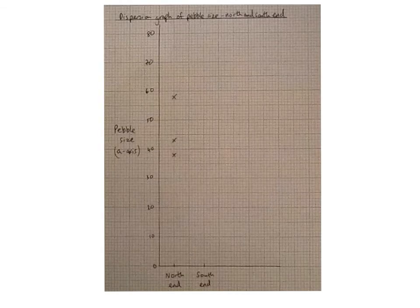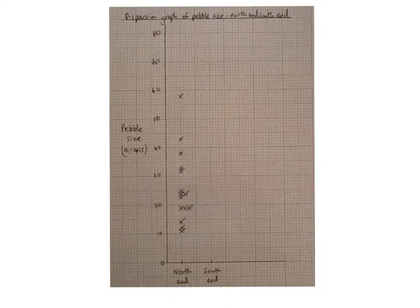So let's start with plotting the north end first. The first piece of data was 58 millimeters and then 43 and 38 and so on. Continue plotting the data until you've plotted all of the data for the north end of the beach. And you can see on the dispersion graph where you have three pieces of data which are the same value, in this case 19, you plot them horizontally.